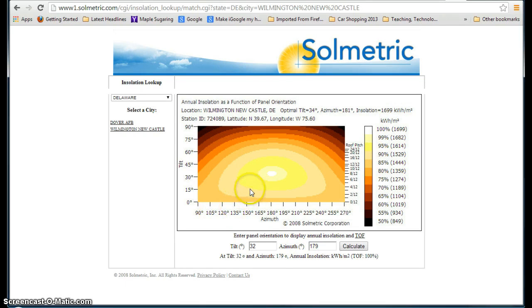Okay, so let's say if I want to use the chart, let's say I'm at a 30 degree tilt and 165 degree azimuth. So I can actually interpolate here, go from 30 over to 165, and I'm right about in that 99% zone, but it's kind of hard to tell.